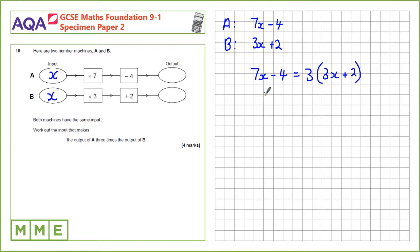Now we need to solve to find the value of x. First, let's expand the right-hand side. 3 times 3x is 9x. 3 times positive 2 is positive 6.